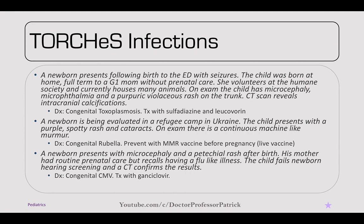A newborn evaluated in a refugee camp presents with a purple spotty rash, cataracts, and on exam a continuous machine-like murmur — pathognomonic for a PDA. This is congenital rubella syndrome. It can be prevented with the MMR vaccine before pregnancy. This is a live vaccine, so it cannot be given during pregnancy.